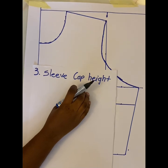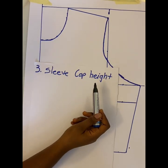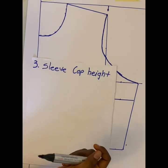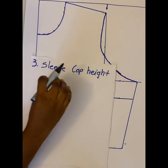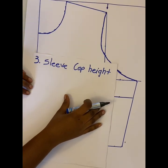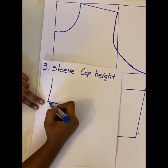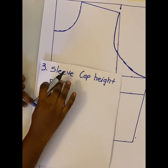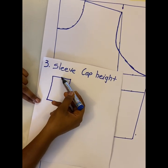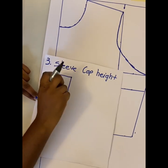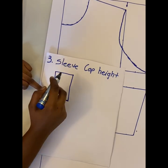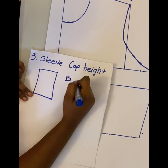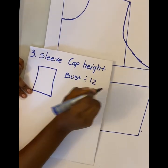The next formula is the sleeve cap height. Let's say you made a blouse and you want to add a sleeve — to draft the sleeve you will need the sleeve cap height. The sleeve cap height is the curved part that fits into your blouse armhole. The formula for the sleeve cap height is your bust measurement divided by 12. It's that simple.